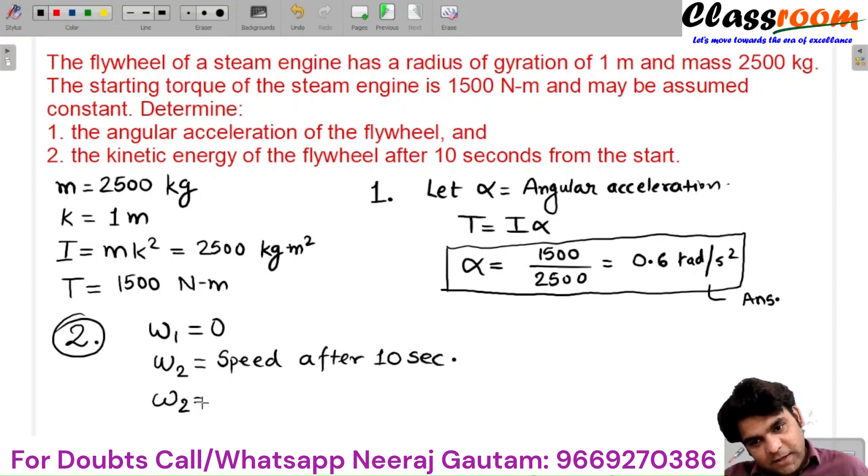Final speed equals initial speed plus acceleration times time: ω₂ = 0 + 0.6 × 10 = 6 radians per second.